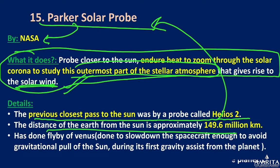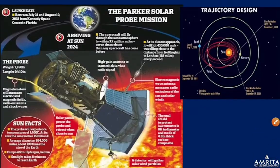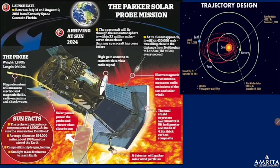The distance from Earth to the Sun is 150 million kilometers. Parker Solar Probe has done a flyby of Venus to slow down enough to avoid the Sun's gravitational pull during its first gravity assist. The probe will experience temperatures of approximately 1,400 degrees Celsius at its core, while the Sun's surface reaches around 50 million degrees Celsius.